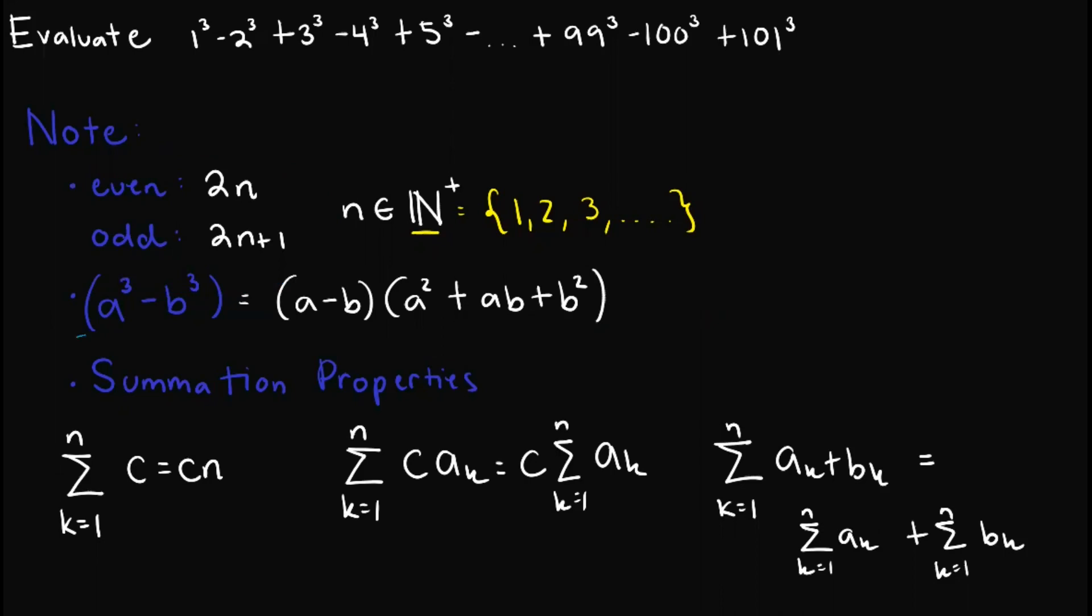After that, we take note of this one, that a³ - b³ is equal to (a-b)(a² + ab + b²). Lastly, we will also need some summation properties.